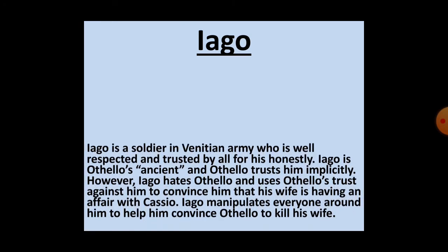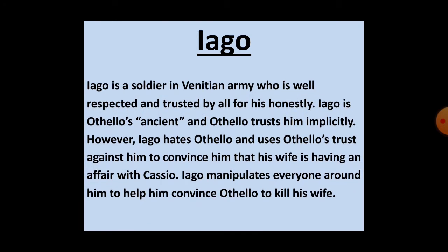Now I move towards our third character, Iago. Iago is a soldier in the Venetian army who is well-respected and trusted by all for his honesty. He is Othello's ancient and Othello trusts him implicitly. However, Iago hates Othello and uses Othello's trust against him to convince him that his wife is having an affair with Cassio. Iago manipulates everyone around him to help him convince Othello to kill his wife.